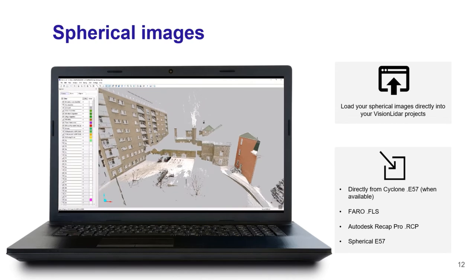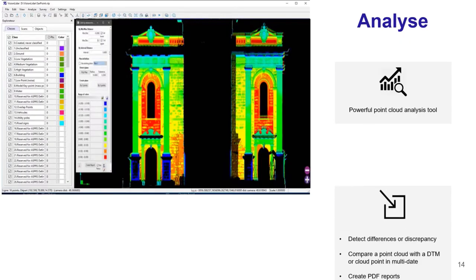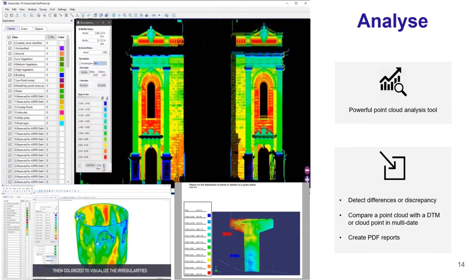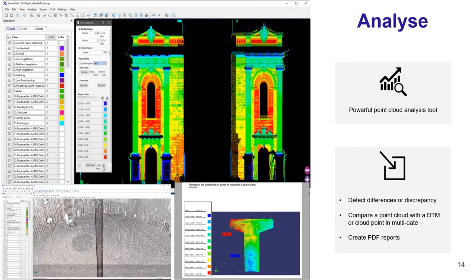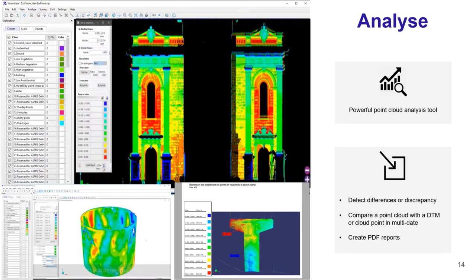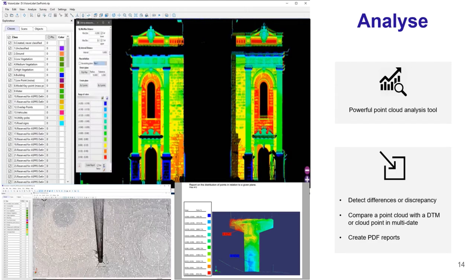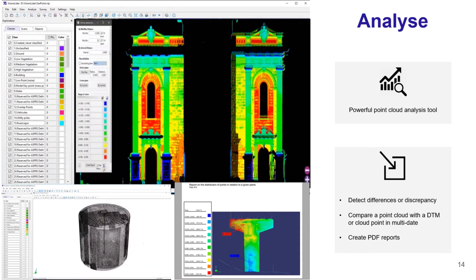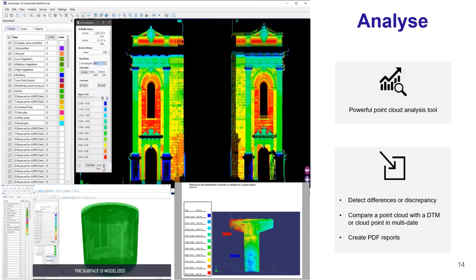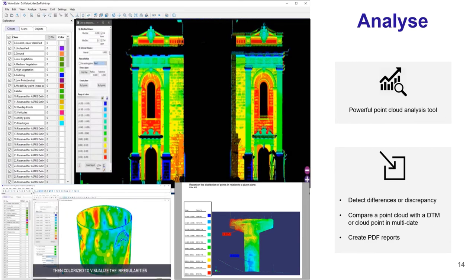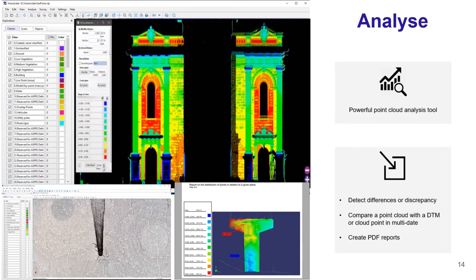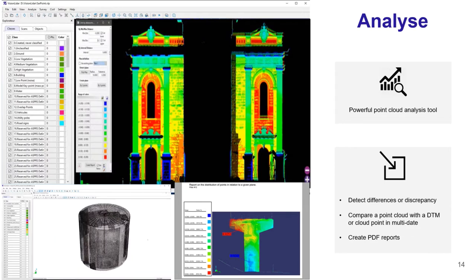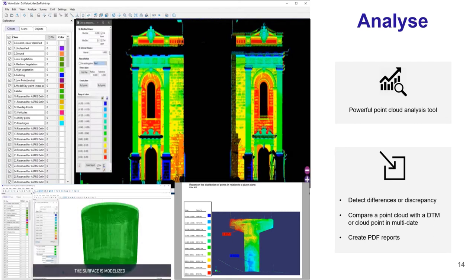In Vision LiDAR, the analyze part includes a powerful tool to detect differences between your point cloud and either a plane, a surface created directly within the software, or another point cloud in multi-date analysis. You can use multi-date analysis to run monitoring on road infrastructures, for example, to see over time where damage has occurred. You then have the option to create a PDF report of this analysis to share with colleagues and clients.